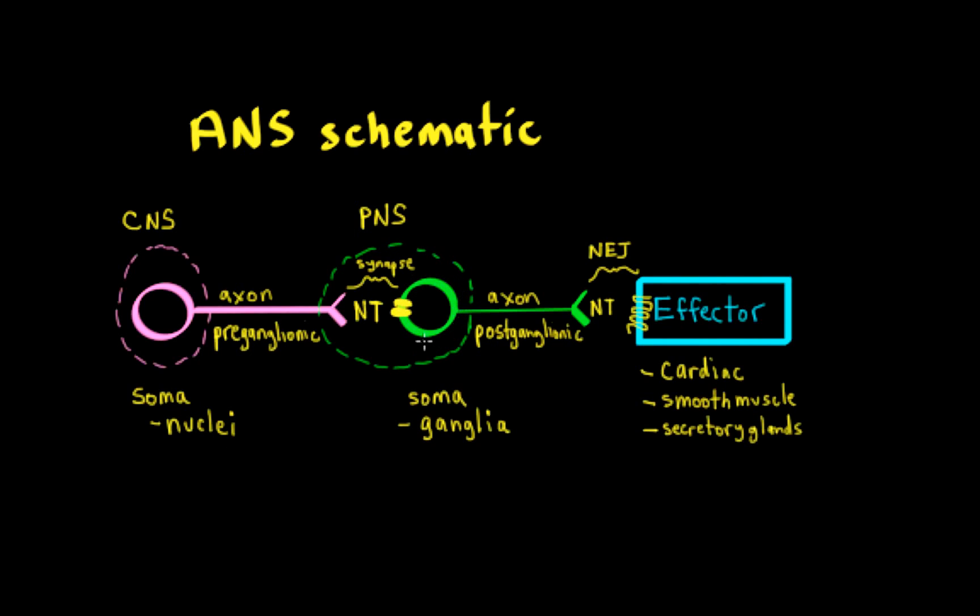The second neuron here, its cell bodies or somas are found in the peripheral nervous system, which is considered outside the brain and spinal cord. And when we have a collection of somas or cell bodies in the peripheral nervous system, they are part of a ganglia.